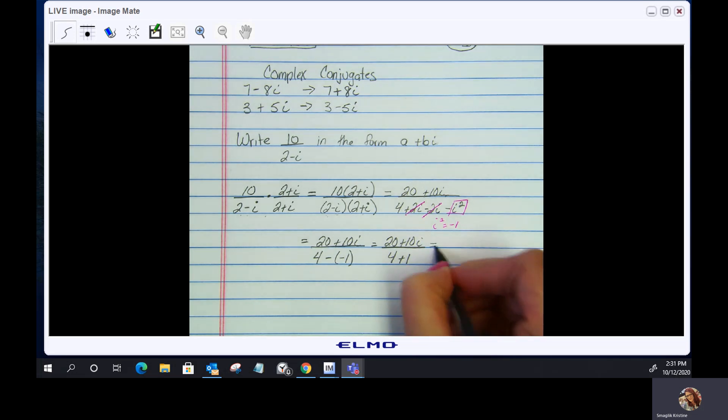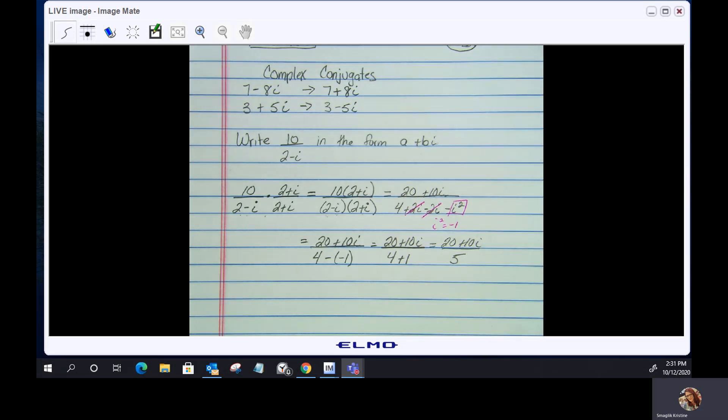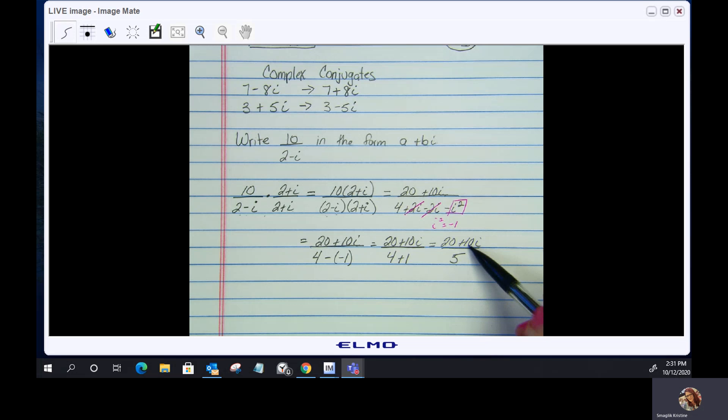Simplifying: 20 plus 10i all over 5. Now we have to be careful here. We can reduce, but remember, this 5 in the denominator is dividing the 20 and it is dividing the 10i. These are terms. Terms are separated by addition or subtraction.